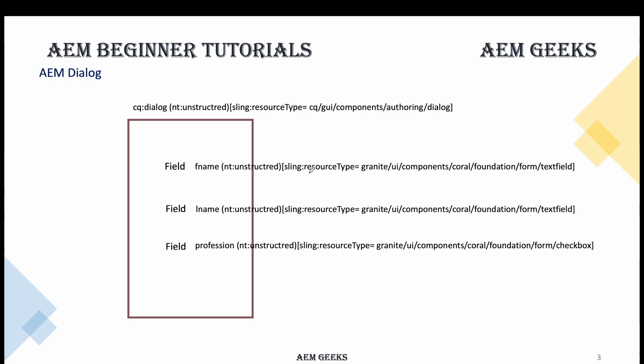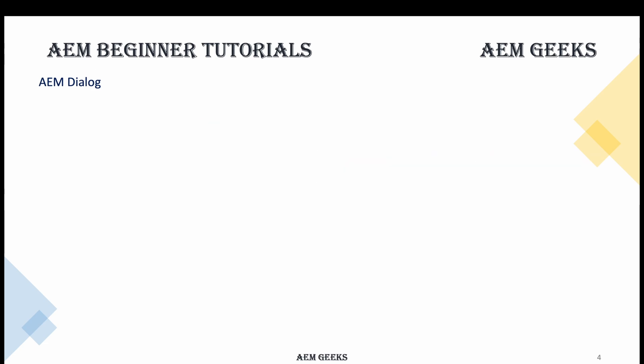This property is used to find either a script or a servlet. So this property will point to the component where there is a script available to render a text field — same way for other kinds of fields. In between these nodes there are other unstructured type nodes, but those won't point to any component; they are just to maintain hierarchy. We'll see this in the demo.